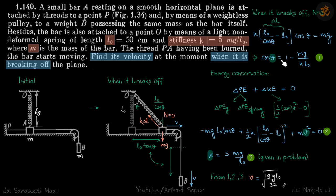So from here we already have the value of theta. Now this is our second equation with second variable v. And k in the problem is given as 5mg by l0.